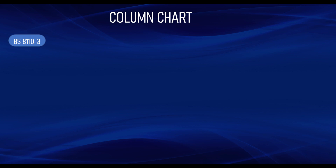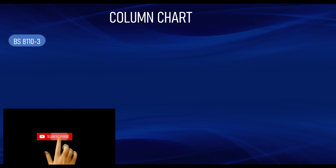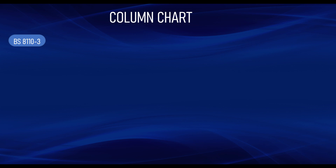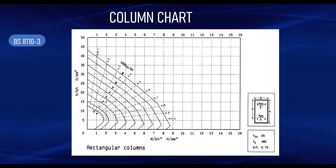A typical design chart can be obtained from BS 8110 Part 3. I'll leave the download link in the description of this video. BS 8110 Part 3 is the code that covers design charts — not just for columns but also for singly and doubly reinforced beams. This is a typical rectangular section column chart, which can also be used to design circular columns.